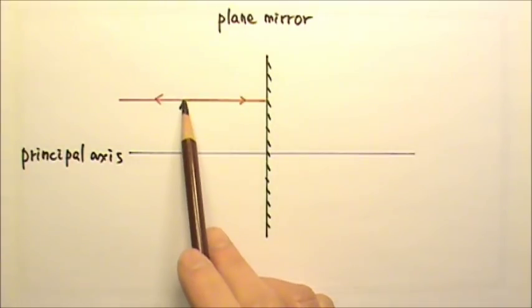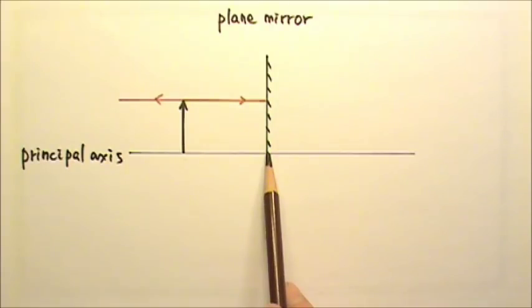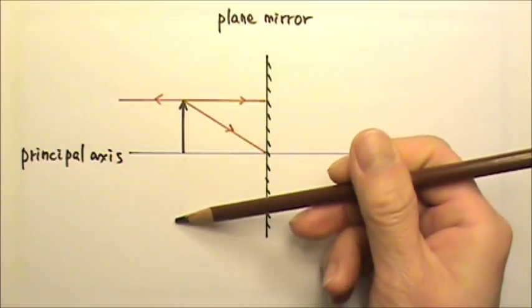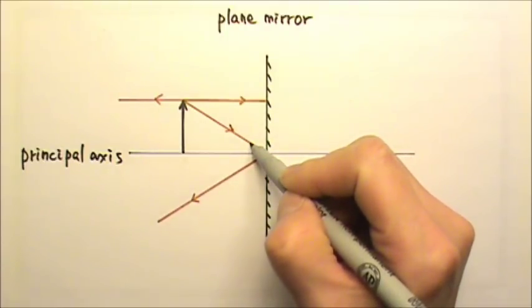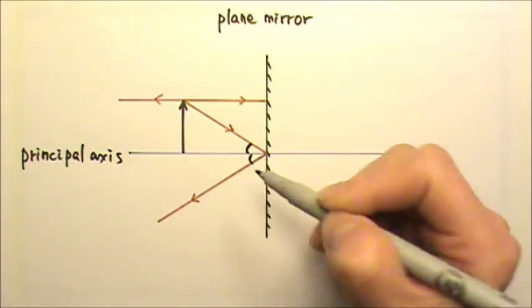I can draw another ray that goes to the point where the principal axis meets the mirror. This ray would reflect symmetrically about the principal axis, because the law of reflection tells us that the angle of incidence equals the angle of reflection.